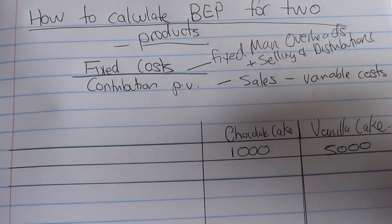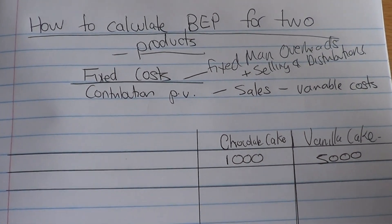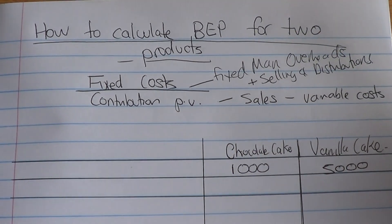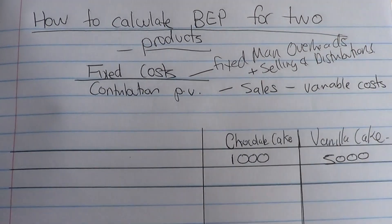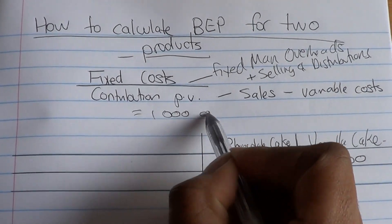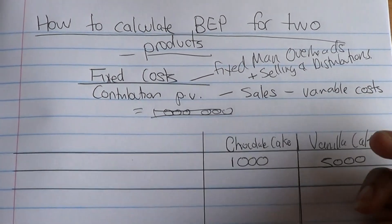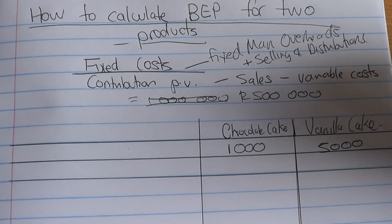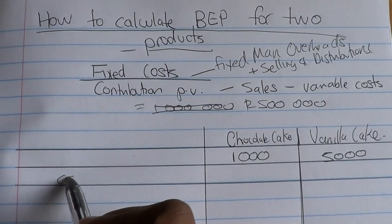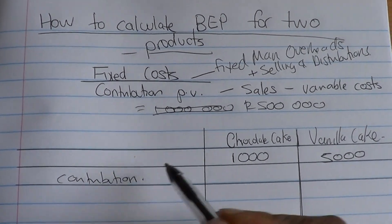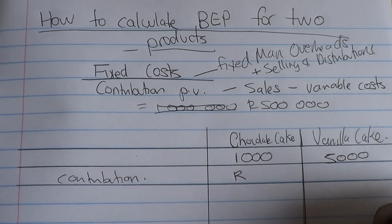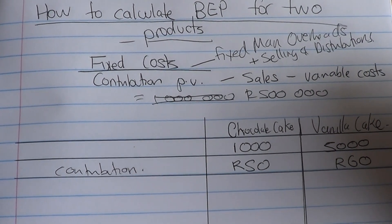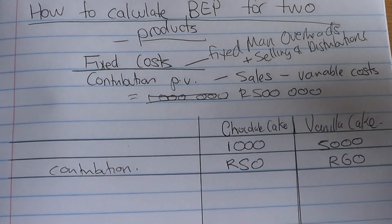Usually you'll be given the amounts of fixed costs, so that part is really easy to get. Let's assume the fixed overheads are 500,000 rand. And let's assume you calculated your contribution per unit for the chocolate cake and got 50 rand for the chocolate cake and 60 rand for the vanilla cake. So the calculation will be easy — your fixed costs don't change, we've set them at 500,000.